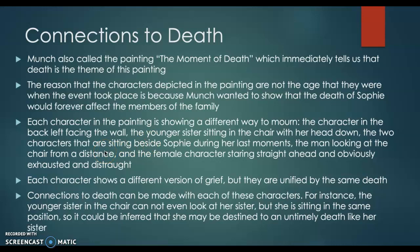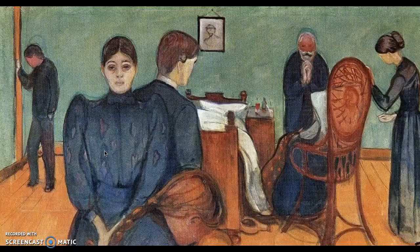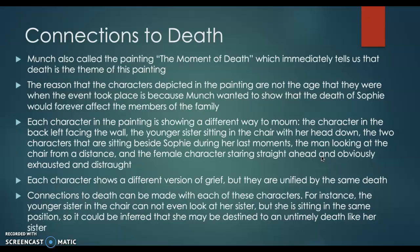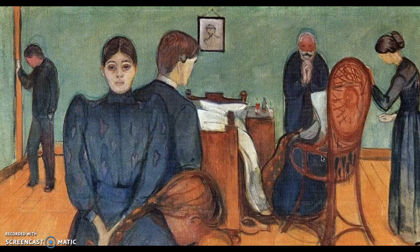You can see that everyone in this painting is grieving in their own separate ways. Connections to death can be made with each of these characters. For instance, the younger sister in the chair cannot even look at her sister, but she's sitting in the same position — head down, arms down, sitting down. Because this is the case, it could be inferred that she may be destined to an untimely death, just like her sister.